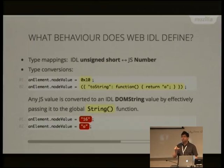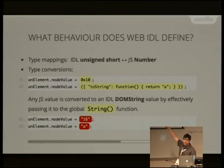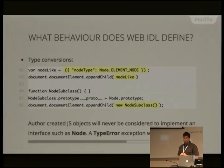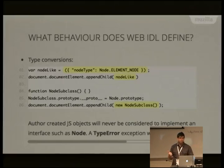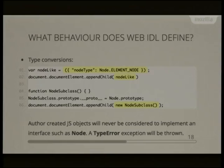For example, for the nodeValue property declared as DOMString: Web IDL says that when converting to a string, you effectively pass it to the global string function, doing whatever the natural JavaScript stringification behaviour is — though not literally calling the global string function since authors can replace it. So the hex value 0x10 gets converted to the string '16', and for an object, the toString method on it will actually be invoked. For interface types like node, we decided you must pass an actual real node that the implementation has provided — you can't mock one up yourself.